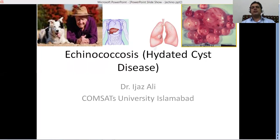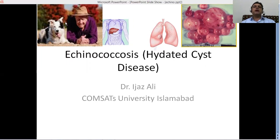The cyst can interfere with the function of your lungs by blocking vital passages, or block vital passages of your liver such as the bile ducts. What is causing this condition? It's a parasite. There are different species — Echinococcus granulosus and Echinococcus multilocularis are more common. The parasite is coming from dogs, which are the definitive hosts.